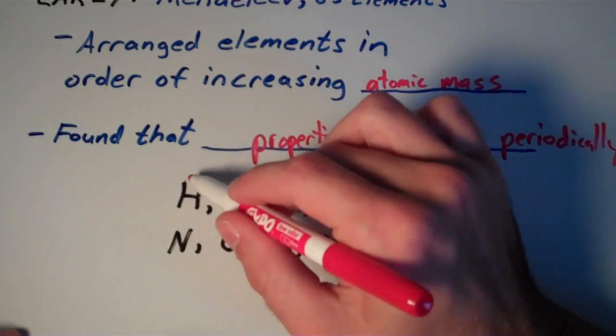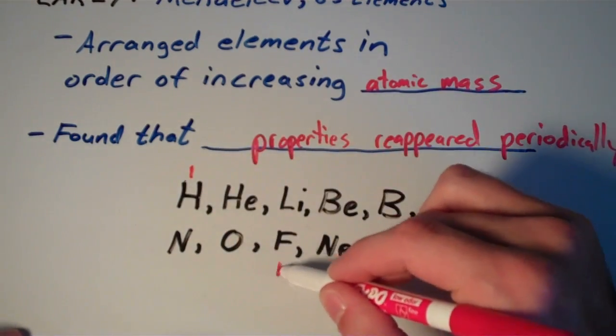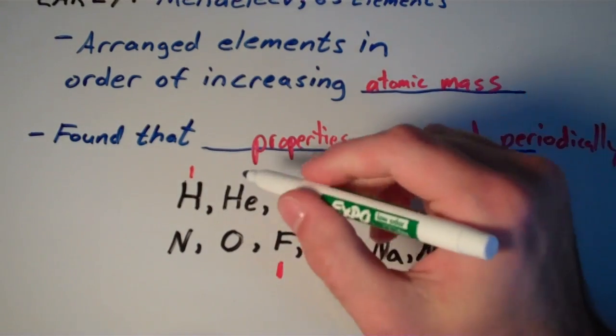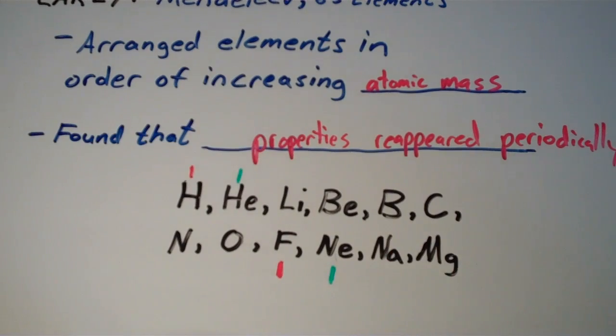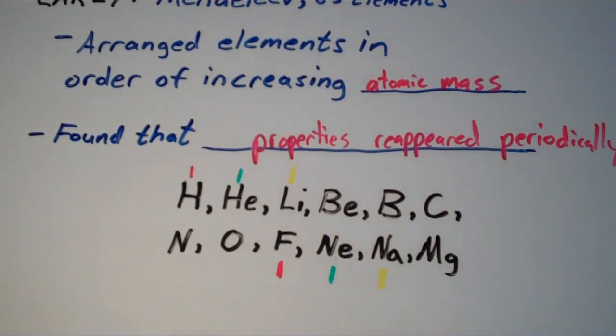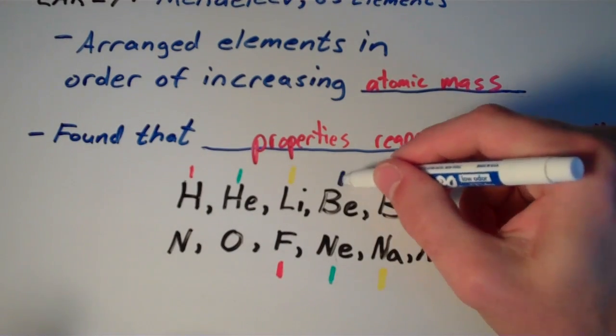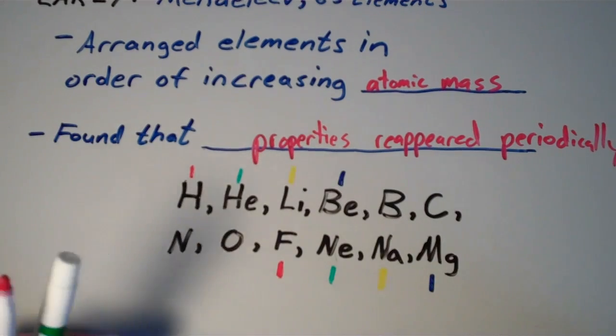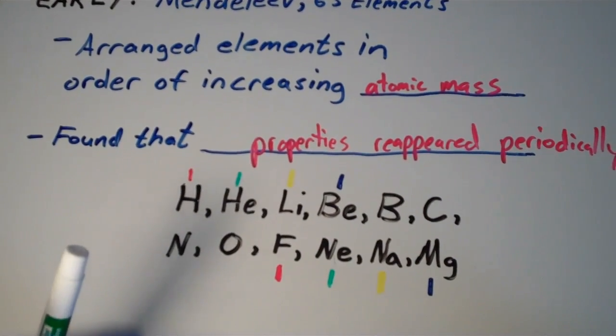It was found that hydrogen and fluorine had similar properties. Helium and neon had some of the same properties. Lithium and sodium had some of the same properties. Beryllium and magnesium also had similar properties. Notice we have what looks like a pattern.